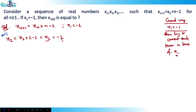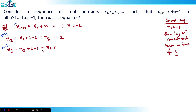Now for x3, put n = 2 in the main equation: x3 = x2 + 2 − 1. Since x2 = x1, this becomes x3 = x1 + 2 − 1. So x3 = x1 + (2 − 1).